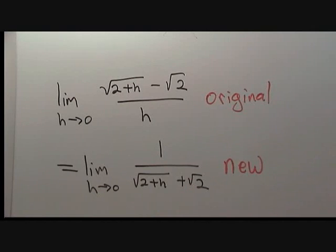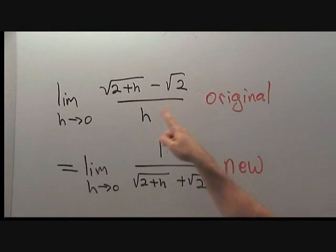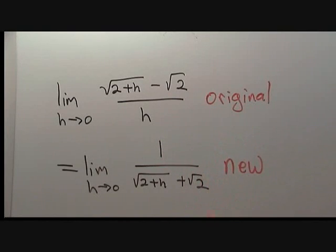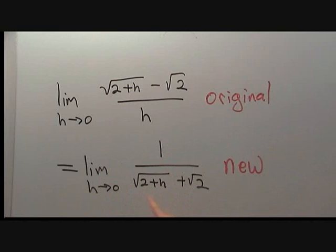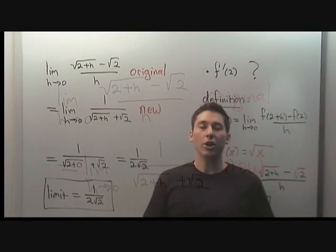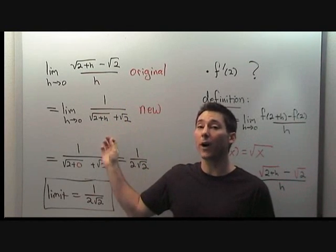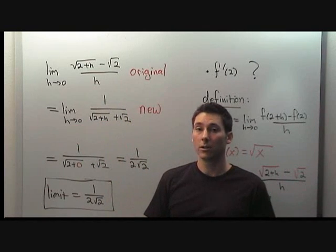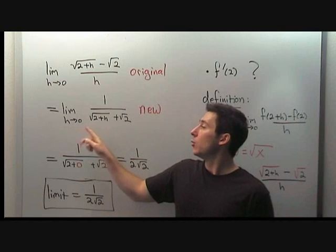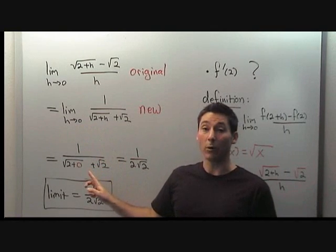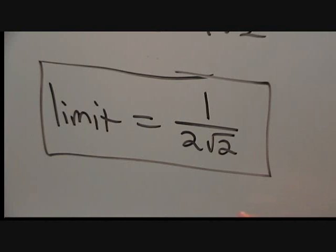The original limit to evaluate was the limit as h goes to zero of root two plus h minus root two, all divided by h. We manipulated that limit by multiplying by the conjugate to produce the new limit: the limit as h goes to zero of one over root two plus h plus root two. This new limit is very easy to evaluate because the expression is a continuous function of h at h equals zero. Therefore, we simply plug in h equals zero, and after simplifying, the answer is one over two root two.